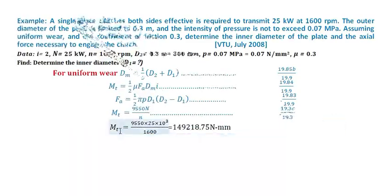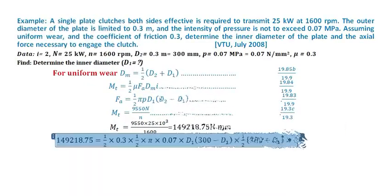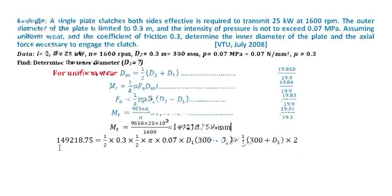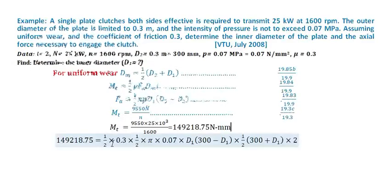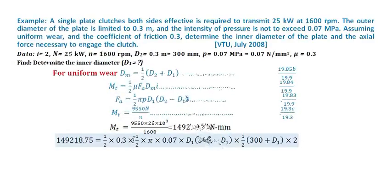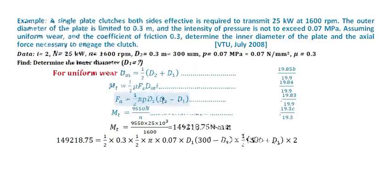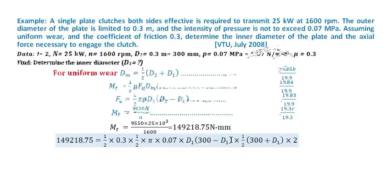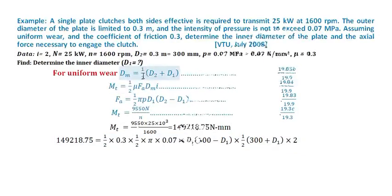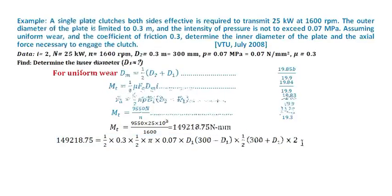Now we got the mt value. Substitute this formula in place of mt. Now 1 by 2 mu is 0.3. In place of fa I'm substituting this entire formula. In place of dm I am substituting this entire formula, and i equals 2.